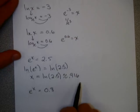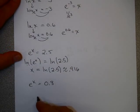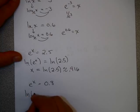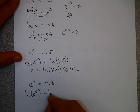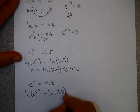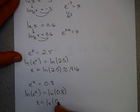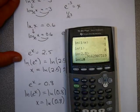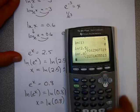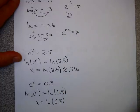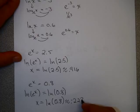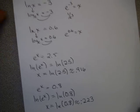See if you can try this one on your own. I'm going to write ln(e^x) = ln(0.8). You could say x = ln(0.8). If you do that on your calculator, you get approximately -0.223.